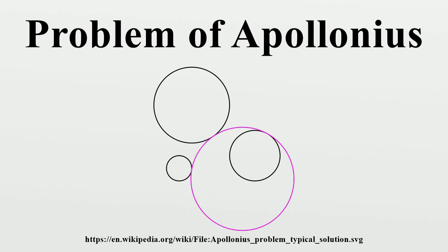A rich repertoire of geometrical and algebraic methods have been developed to solve Apollonius' problem, which has been called the most famous of all geometry problems. The original approach of Apollonius of Perga has been lost, but reconstructions have been offered by François Vieter and others. Based on the clues in the description by Pappas, the first new solution method was published in 1596 by Adrian van Roemen, who identified the centers of the solution circles as the intersection points of two hyperbolas. Van Roemen's method was refined in 1687 by Isaac Newton in his Principia, and by John Casey in 1881.